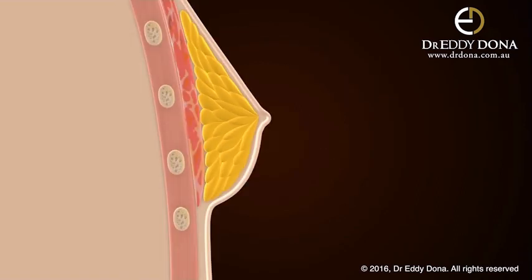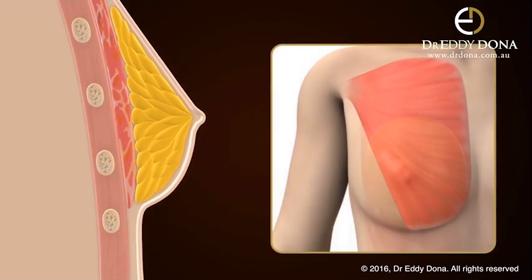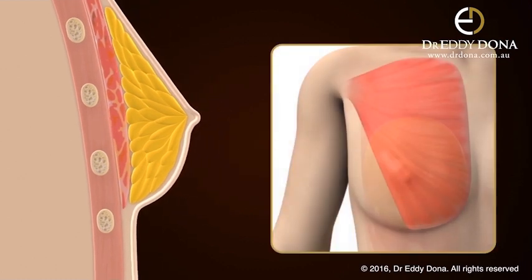A common cause of a double bubble is that which can occur in those women that have a very short distance from the nipple to the lower breast fold, or a tight breast space. In these cases, I always use the most advanced techniques and make the necessary adjustments to the breast tissue, muscle, and use the optimal implant size and style to minimize the risk of a double bubble.